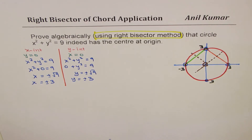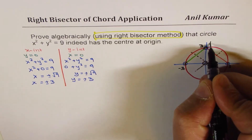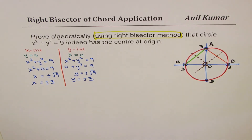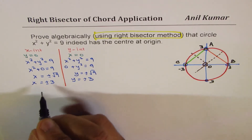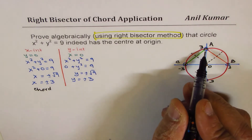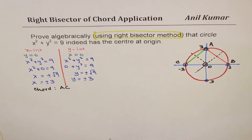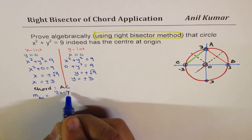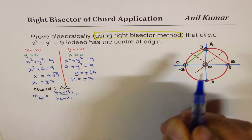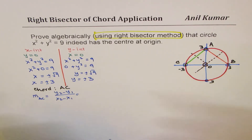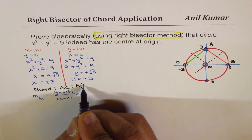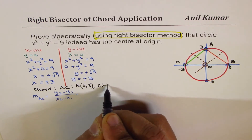Let's label the points: A is (0, 3), B is (3, 0), and C is (−3, 0). We will consider the chord AC. The slope M of AC using the formula (y₂ − y₁)/(x₂ − x₁): substituting coordinates of A = (0, 3) and C = (−3, 0), we get (0 − 3)/(−3 − 0) = +1. So the slope of AC is +1.